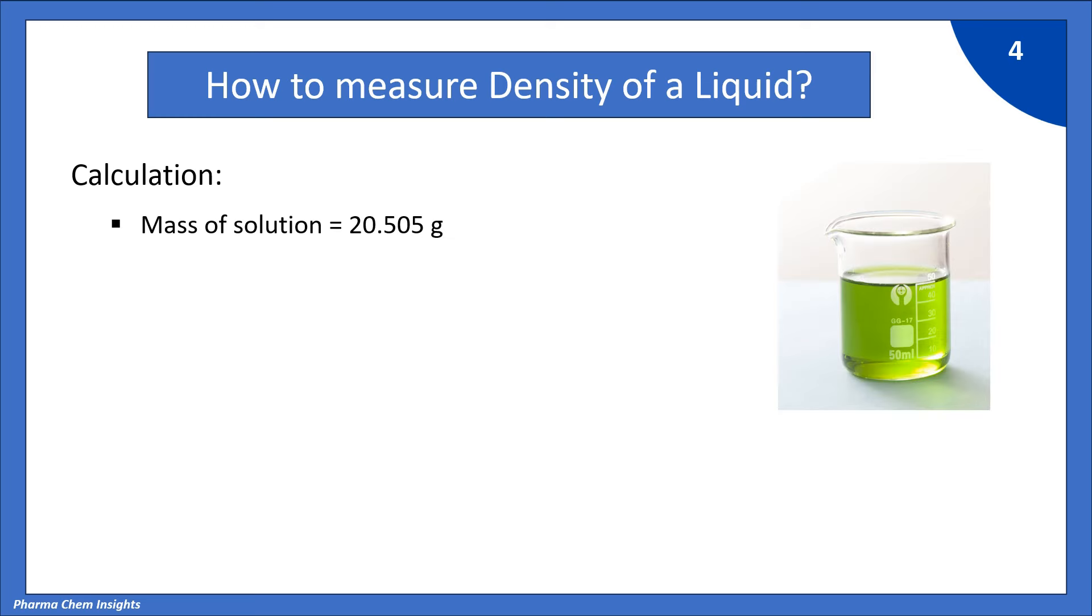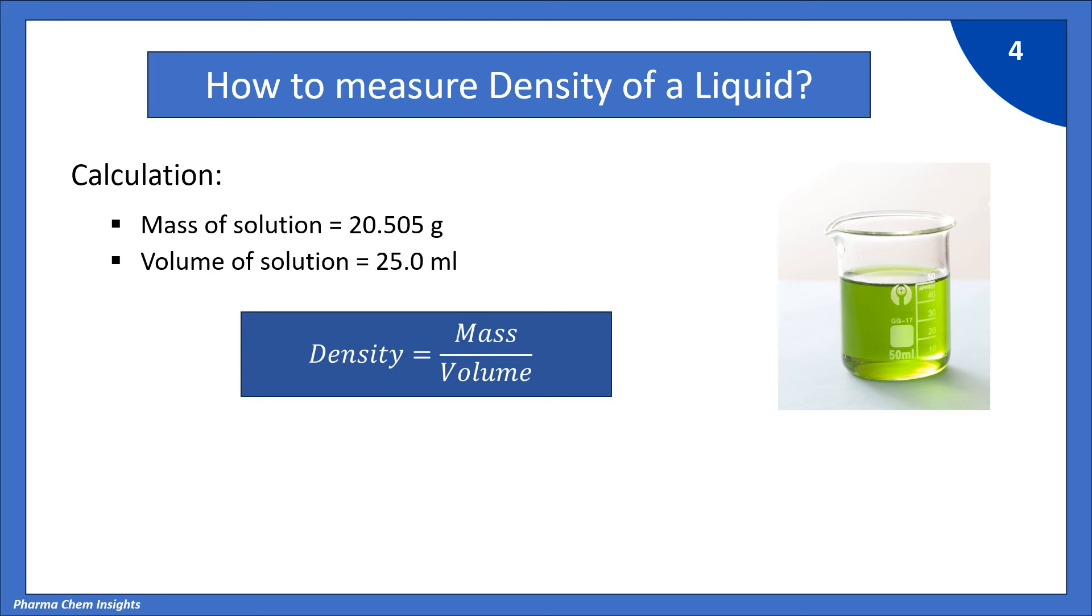Mass of solution is 20.505 g. Volume of solution is 25 ml. So, according to formula, density is mass divided by volume. So, by putting the values, mass is 20.505 divided by volume is 25.